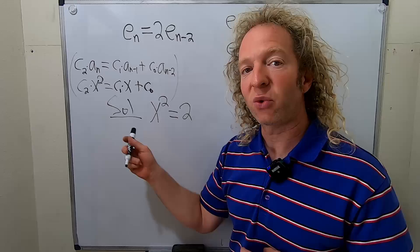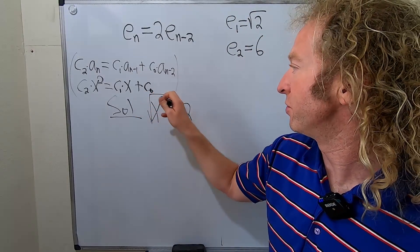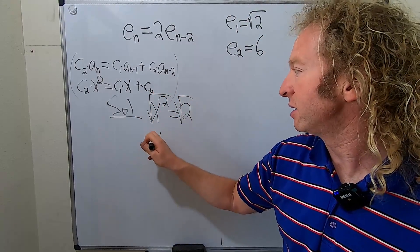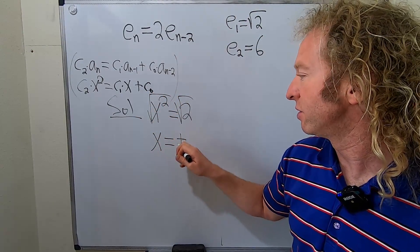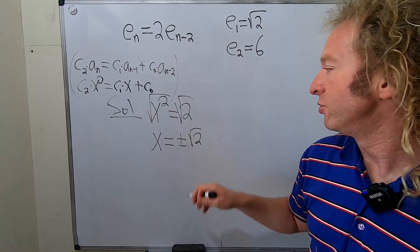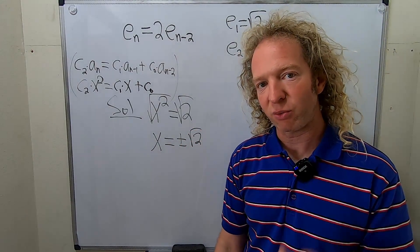All right, then we have to solve this equation for x. So you take the square root of both sides. So you get x equals plus or minus the square root of 2. So we have two distinct real roots.